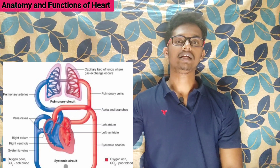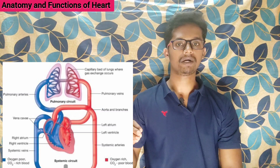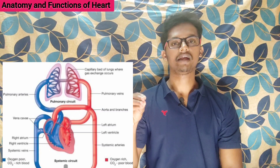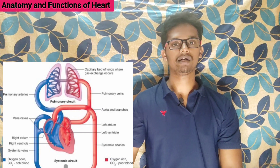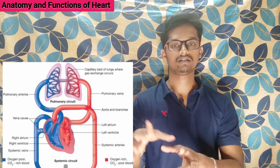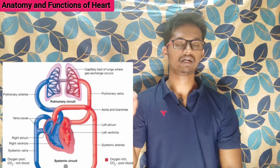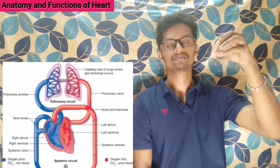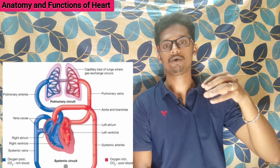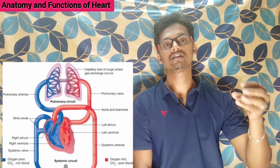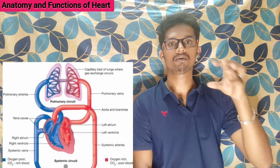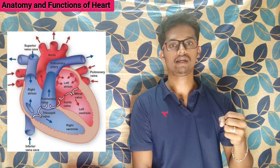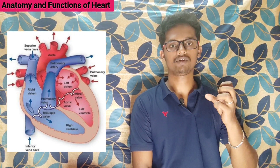Next, the function of the heart. Deoxygenated blood collects at the right atrium, then leads to the right ventricle through the tricuspid valve. From the right ventricle, pulmonary arteries carry the blood to the lungs, where gas exchange happens — deoxygenated blood becomes oxygenated blood. The oxygenated blood then returns through pulmonary veins to the left atrium, passes through the bicuspid or mitral valve into the left ventricle, and the left ventricle pumps the blood to all parts of the body through the aorta via contraction and relaxation of the muscular layer.